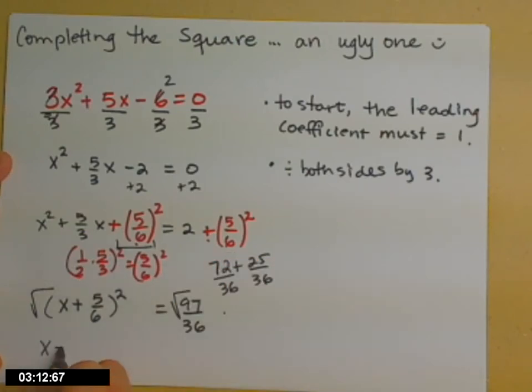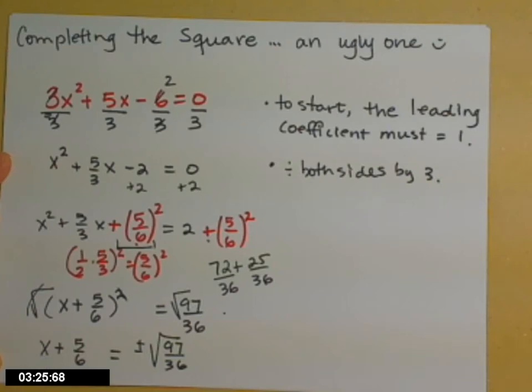Remember that when we square root both sides, we need to include a plus-minus on one of the sides. Notice what happened on the left, the square root and the squaring canceled. It just gives you that x plus 5 sixths. And then on the right, it looks like we can tidy a bit.